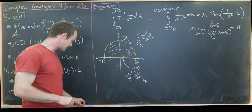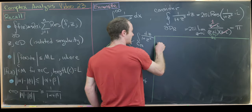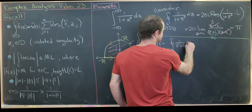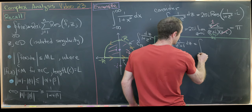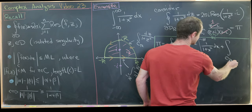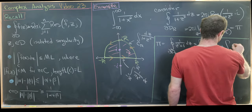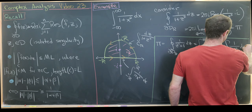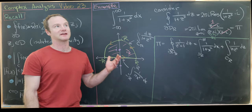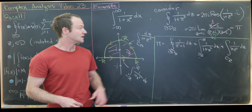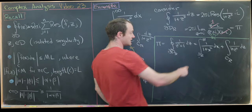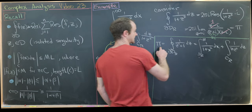So we know that π equals the integral over the boundary of D_R of 1 over (z² + 1) dz, which equals the integral from −R to R of 1 over (1 + x²) dx plus the integral over C_R of 1 over (1 + z²) dz. The general rule here is that this extra piece over C_R will go to zero as R goes to infinity.